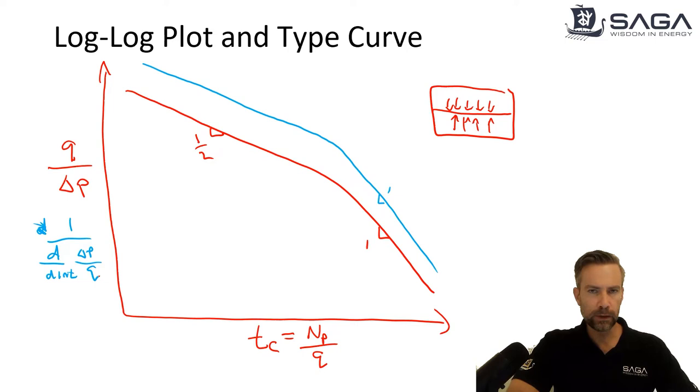I have mixed feelings about this as a practical tool in general, when we talk about production data analysis, mostly because it amplifies the reservoir signal, but it also amplifies the noise. So if you have a lot of noise in your data, and this is particularly true for liquids rich cases where we don't have bottom wall gauge data, the derivative sometimes is too noisy to make any sense out of, but it's worth a try anyways when you're doing this sort of work.